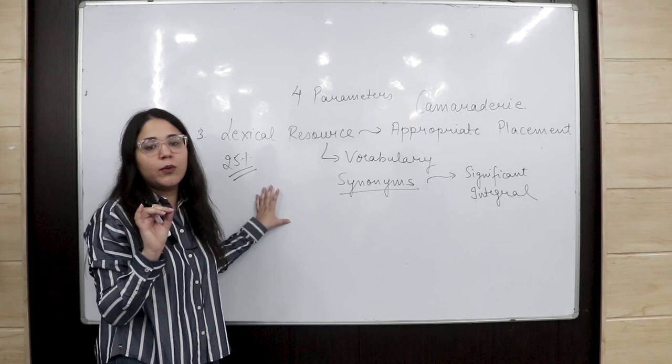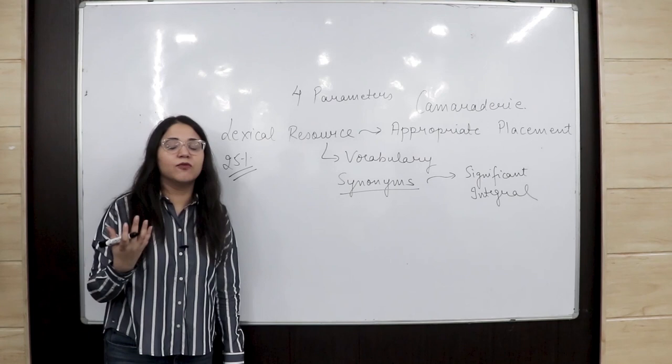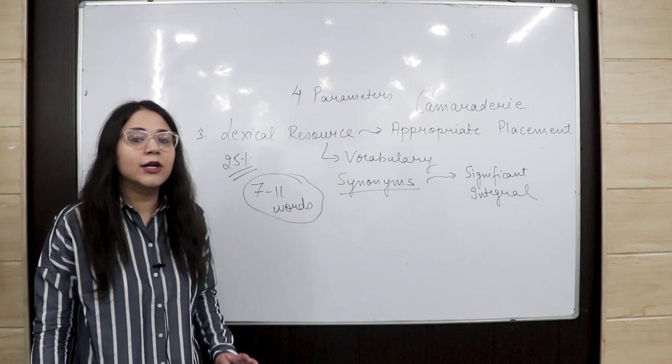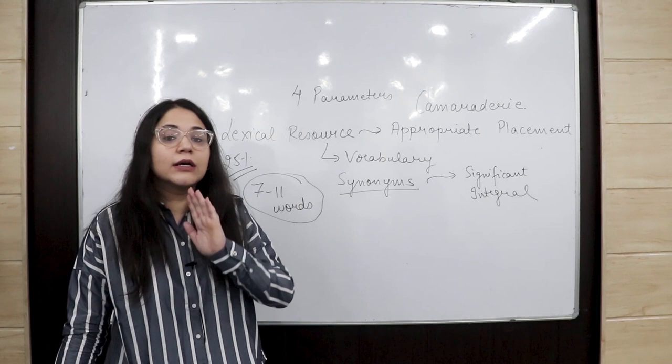The examiner searches for approximately 7 to 11 words of good vocabulary in your Writing Task 2. So try to work on synonyms, but most importantly make sure these synonyms are appropriately placed.